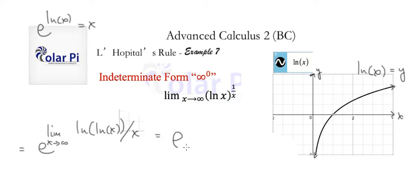And we're going to write e to the limit as x goes to infinity of derivative of this. The derivative of that is 1 over ln of x times the derivative of ln of x, which is 1 over x. And then divided by the derivative of the denominator function is just 1. So, this is all we have as x goes to infinity.